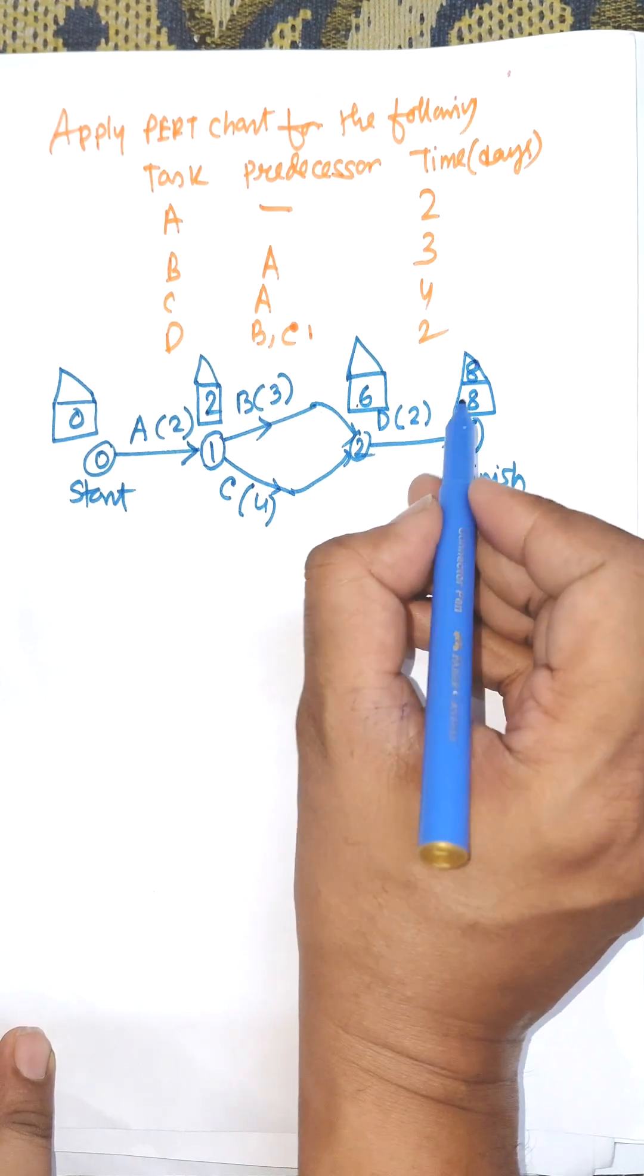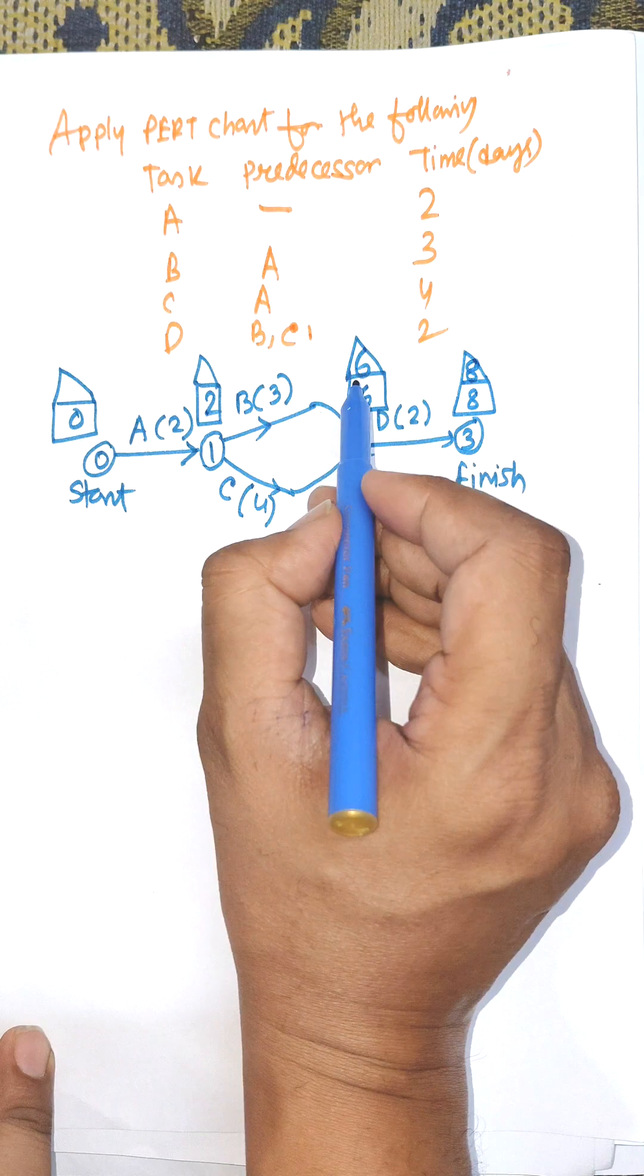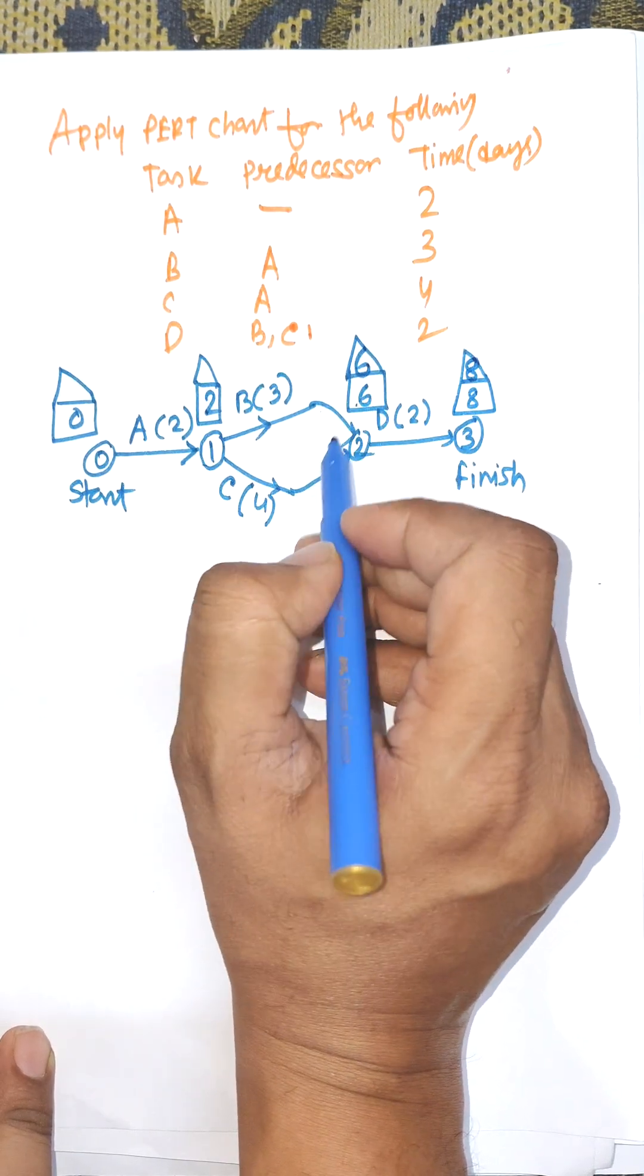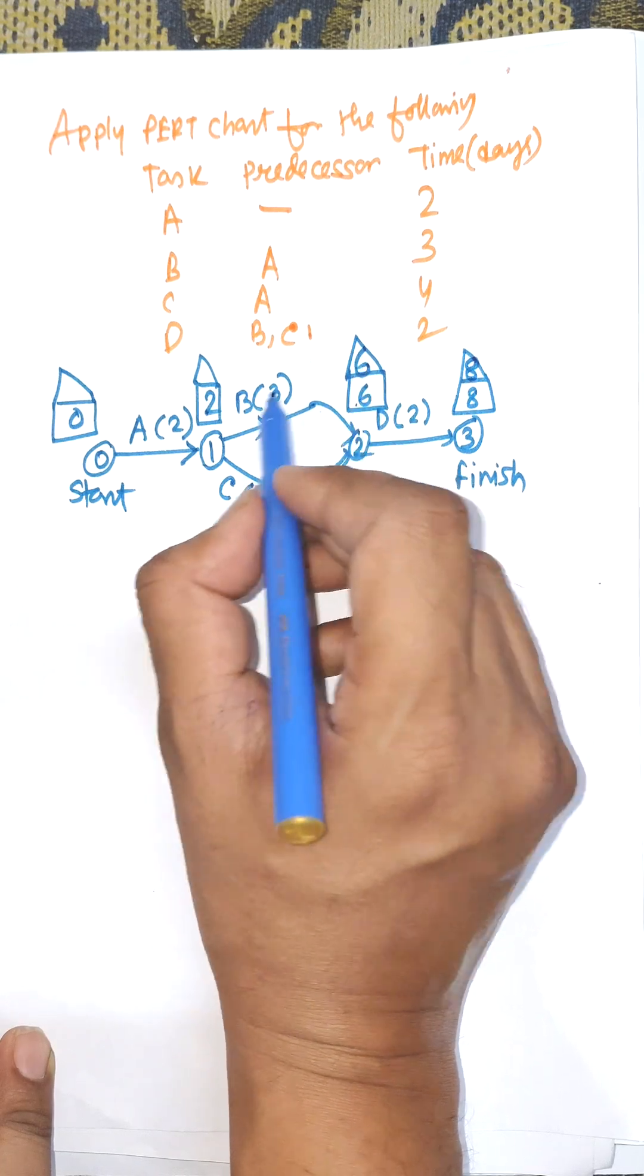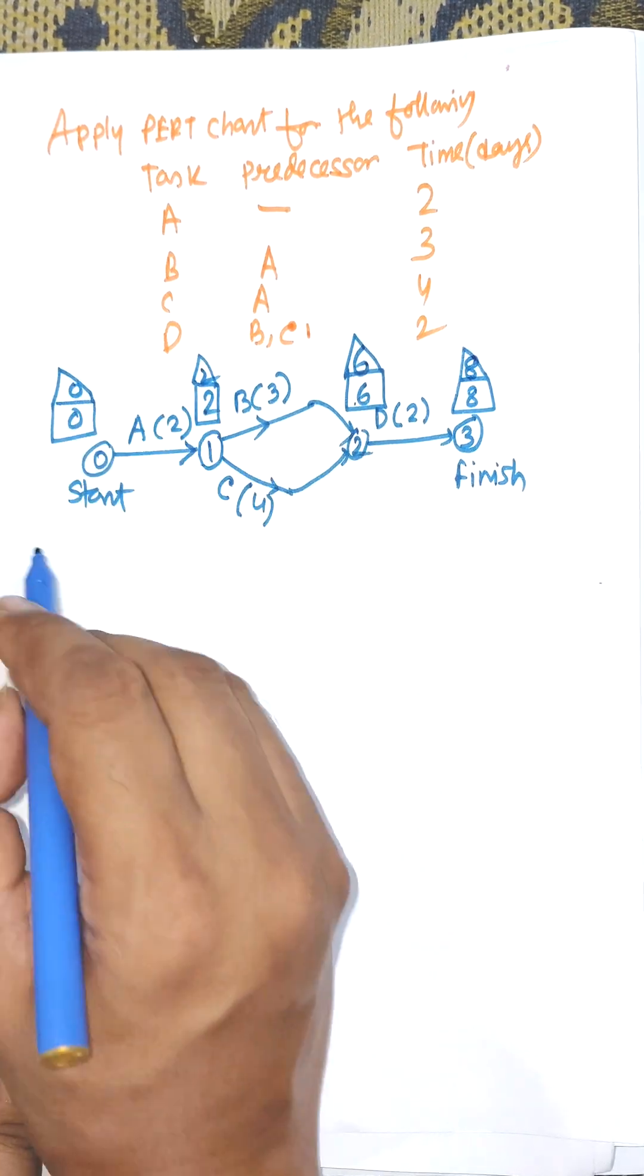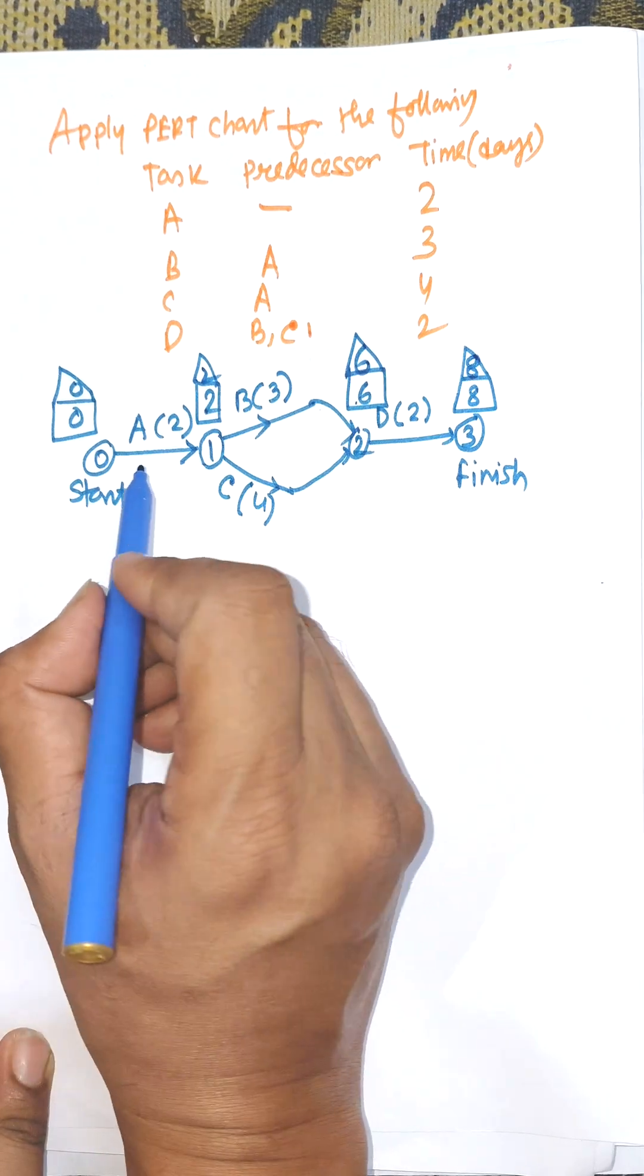It is considered as 8. 8 minus 2 is 6. 6 minus 3 is 3 and 6 minus 4 is 2. Now for backward calculation we need to consider minimum value. 6 minus 3 is 3 and 6 minus 4 is 2, minimum is 2. And 2 minus 2 is 0.